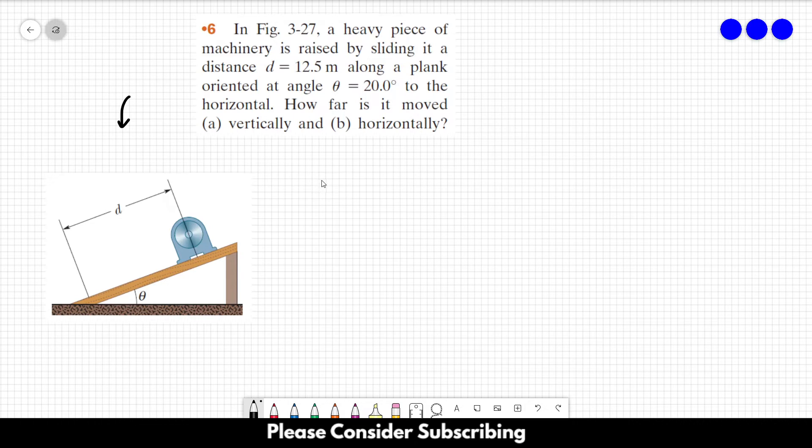How far is it moved vertically and horizontally? So we know that the heavy piece of machinery is slid from here to this place over here, and you want to know this height over here and this distance over there. This is what we want to know.